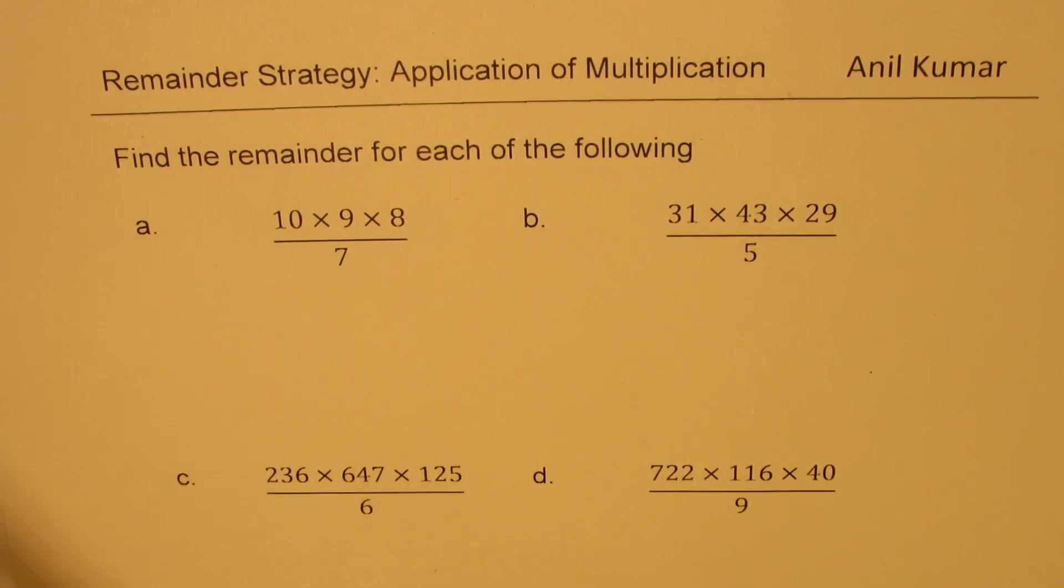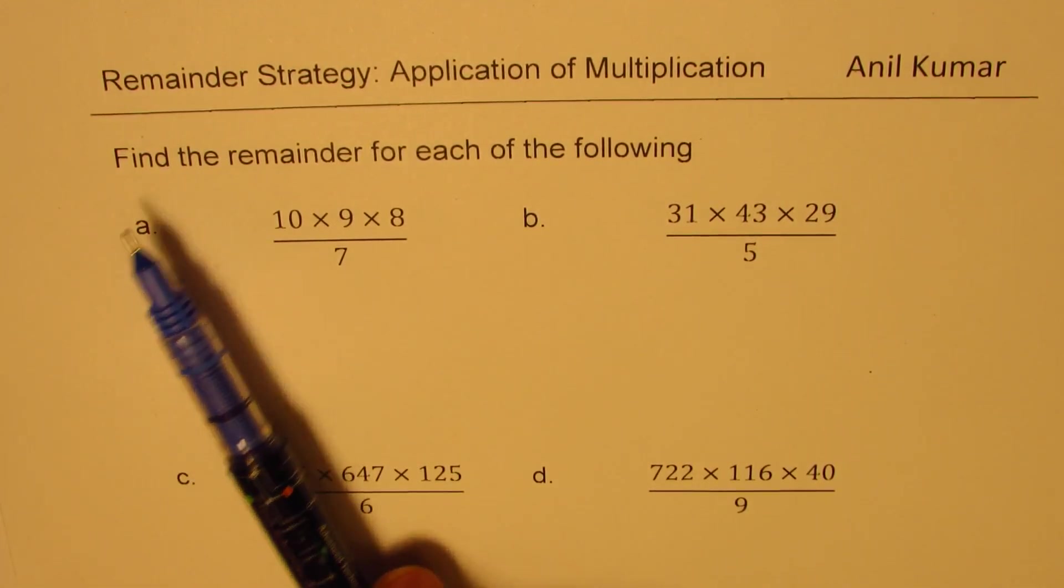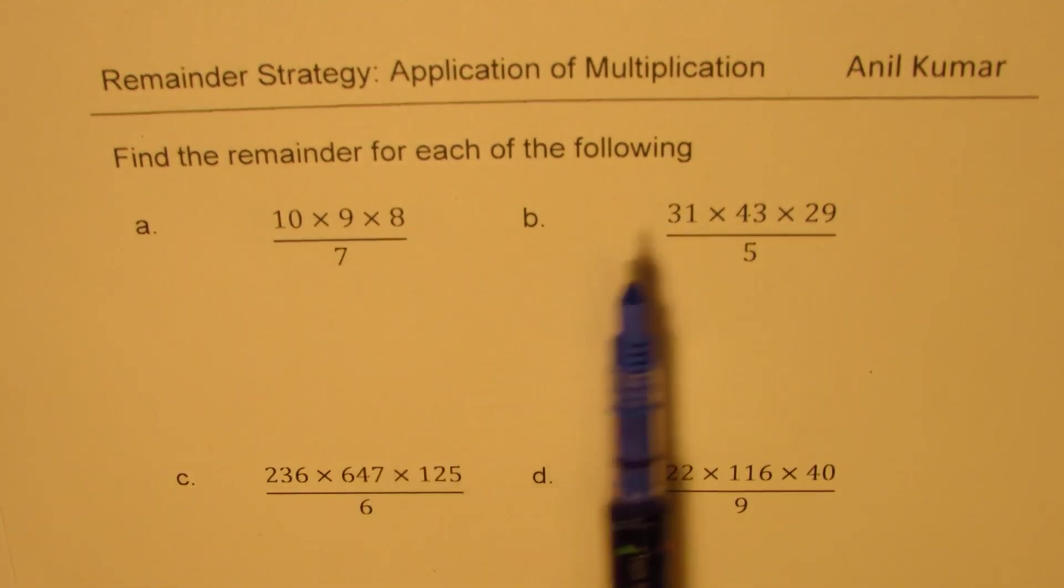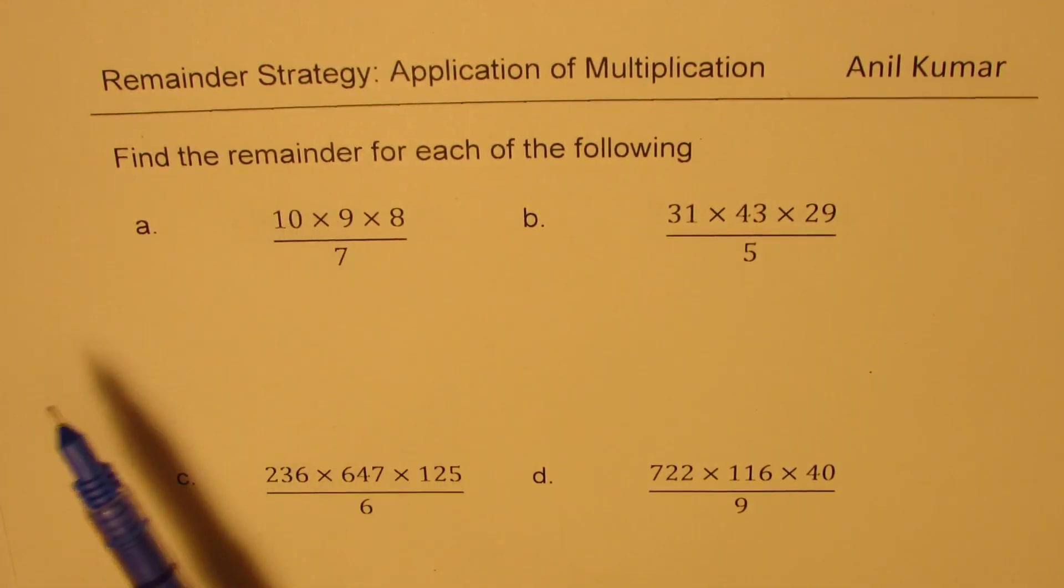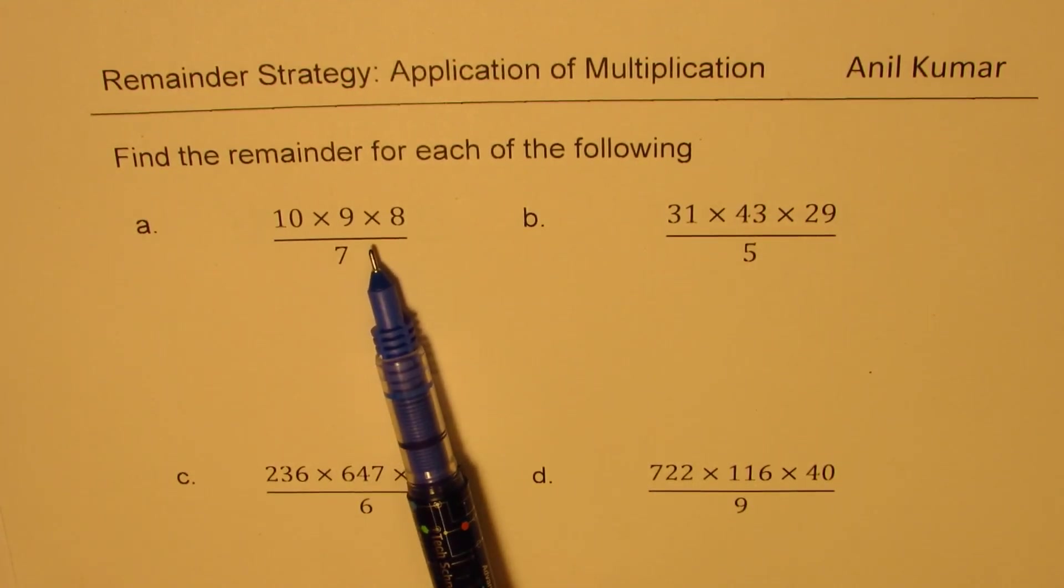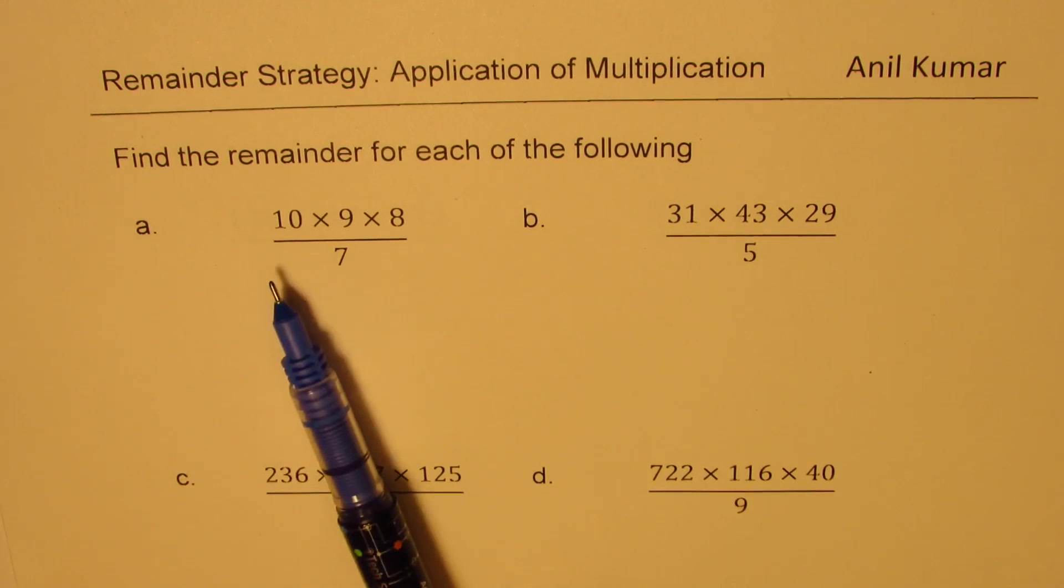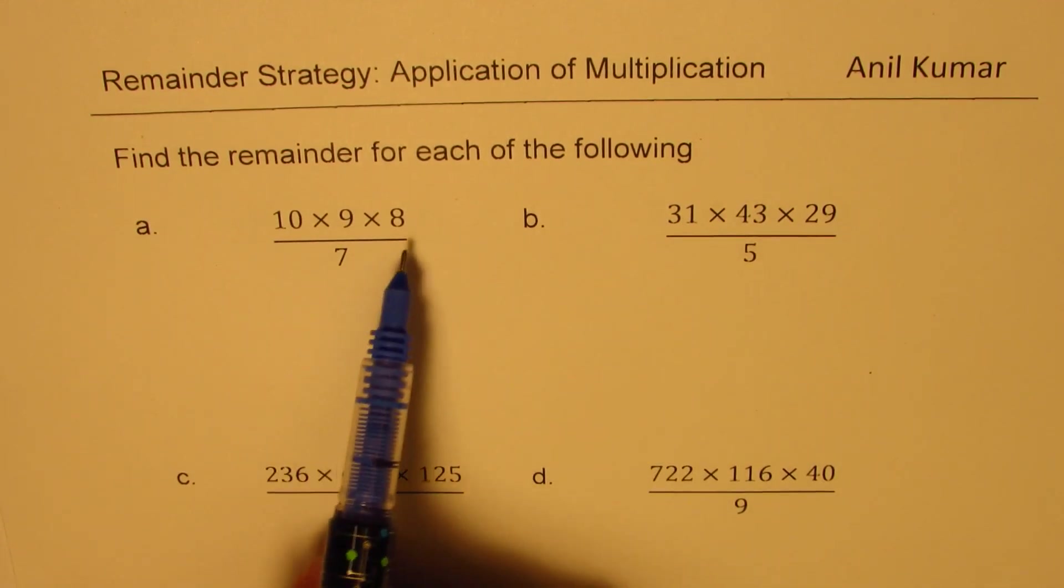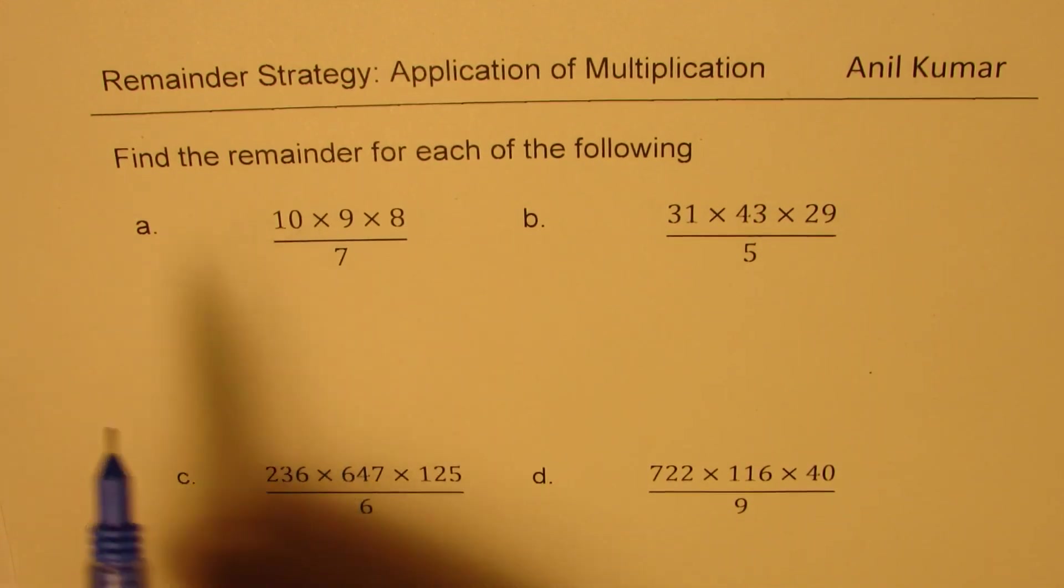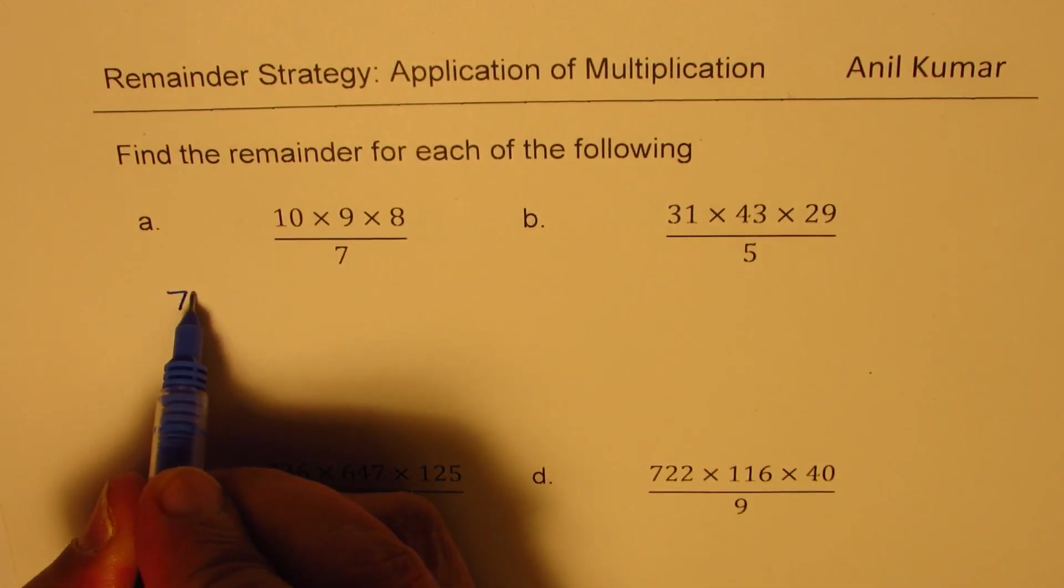Let us take a few simple examples. The question is similar - find the remainder for each of the following. We have four examples. The first one is very simple: ten times nine times eight divided by seven. We need to find the remainder. You could easily multiply them. So you get nine times eight is 72, so this is 720.